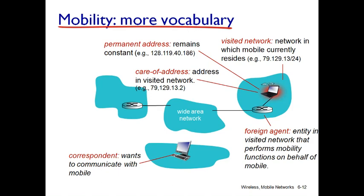Last session we saw what is permanent address and what is care-of address. When the mobile user moves from one area of the network to another, that network is called a visited network or foreign network. There is one router called a foreign agent that acts on behalf of the mobile user — it broadcasts about its presence, and as soon as the mobile user visits this network, they come to know the presence of the foreign agent and will contact it.